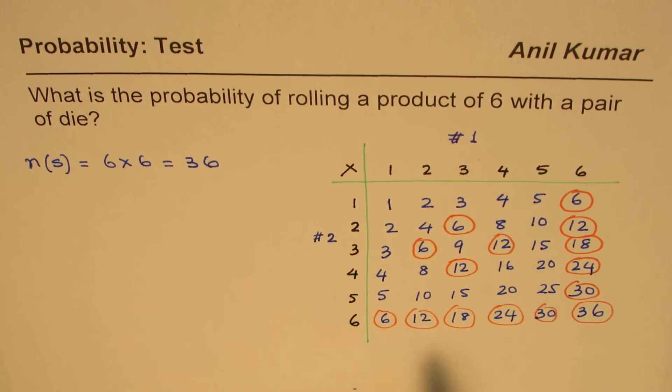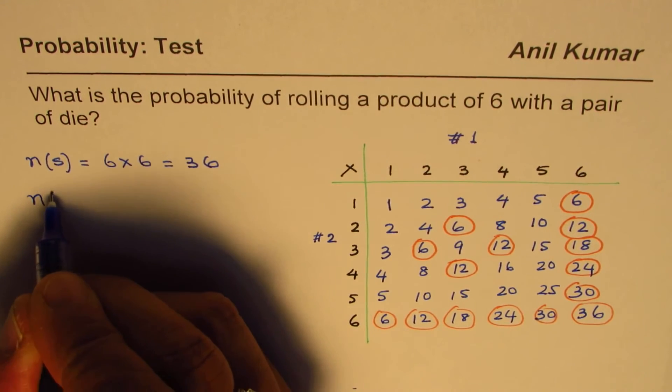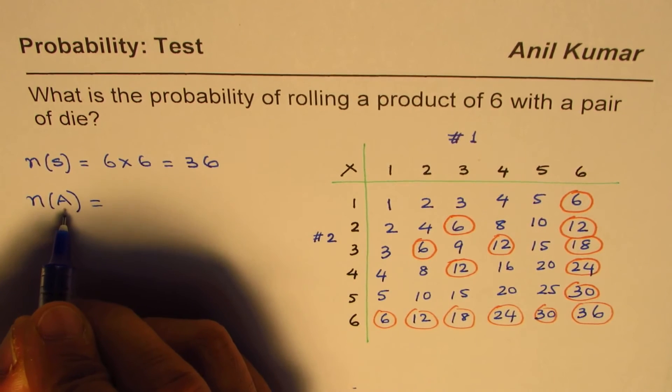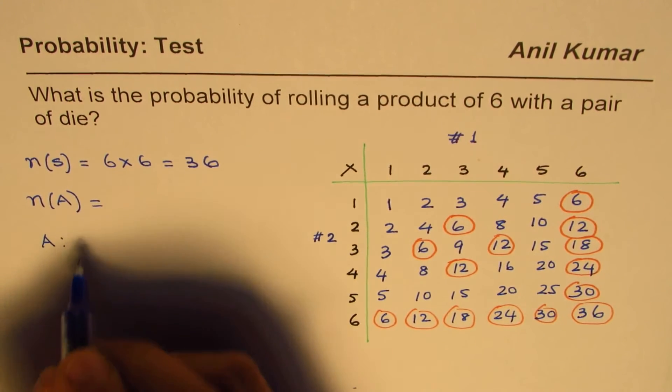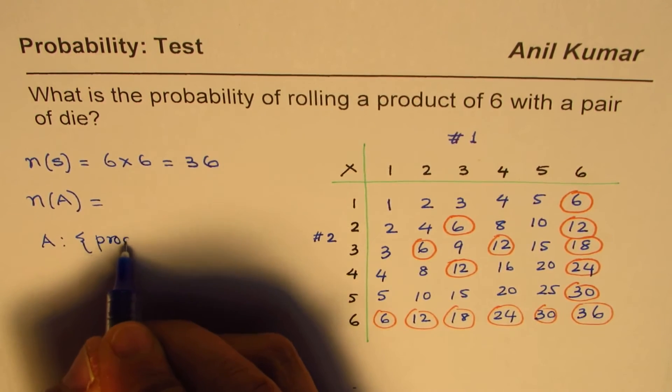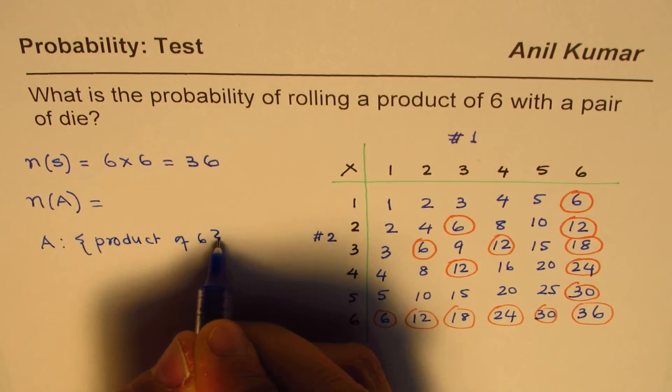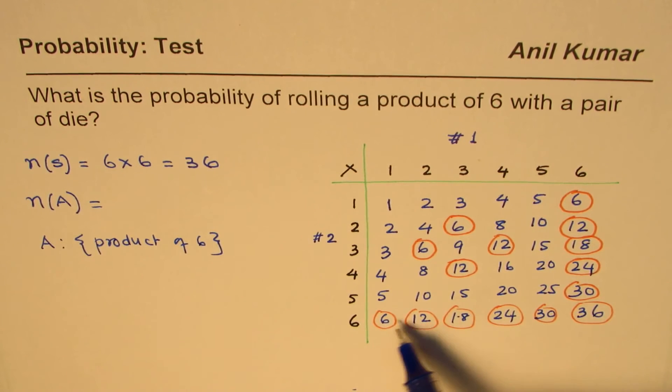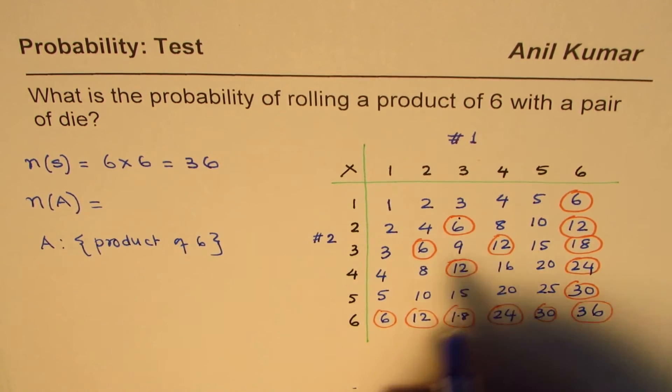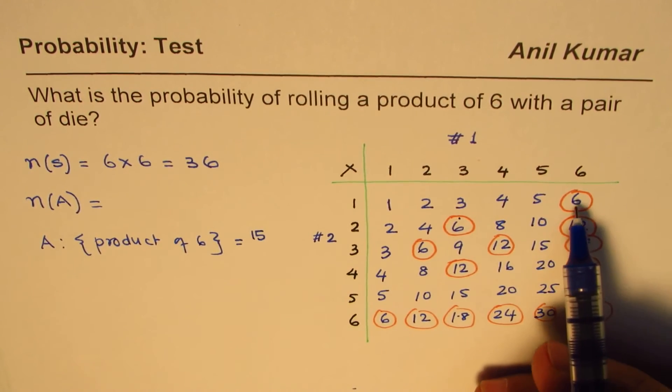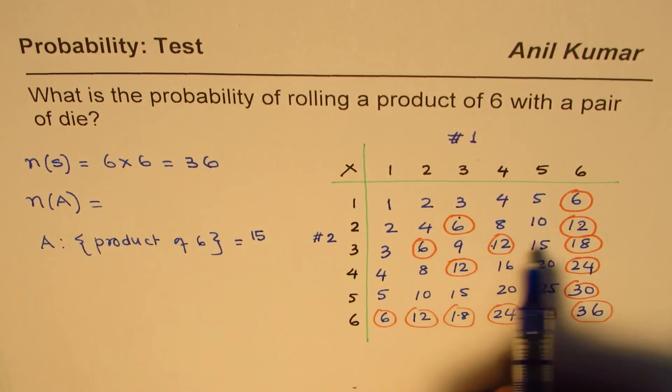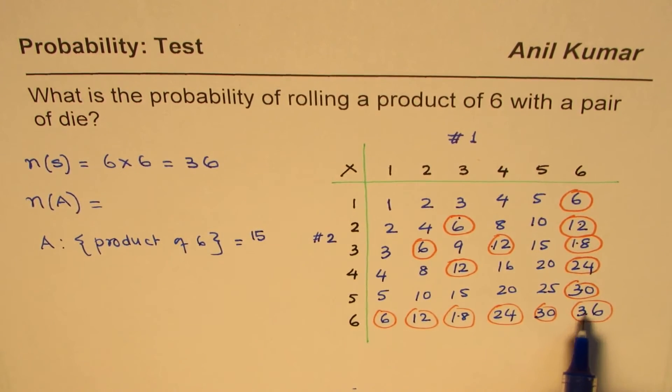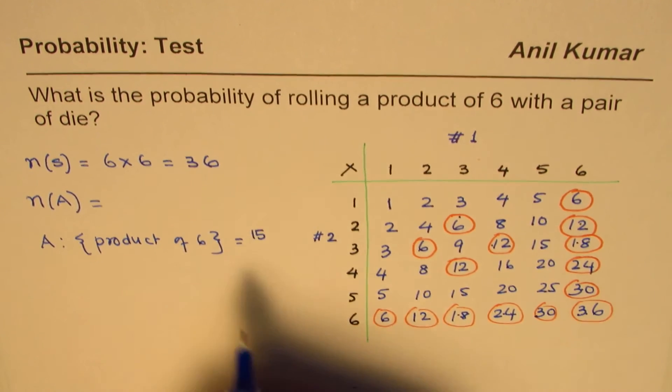So these are all the numbers which we get. We can just count them and say if probability of getting six is the event A, so we have defined event A is product of six. Let's count them: 1, 2, 3, 4, 5, 6, 7, 8, 9, 10, 11, 12, 13, 14, 15. So the total number of elements which are products of six is fifteen.